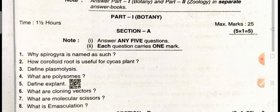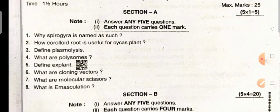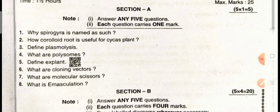Let's check our topics. First section: Why is Spirogyra named as such? How is coralloid root useful for the cypress plant? Define plasmolysis. What are polysomes? Define its plant. What are cloning vectors? What are molecular scissors? What is emasculation?